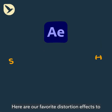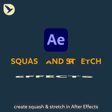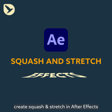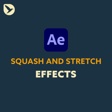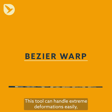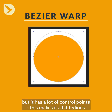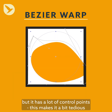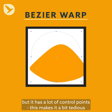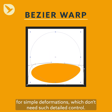Here are our favorite distortion effects to create squash and stretch in After Effects. Number 1: Bezier Warp. This tool can handle extreme deformations easily, but it has a lot of control points. This makes it a bit tedious for simple deformations, which don't need such detailed control.